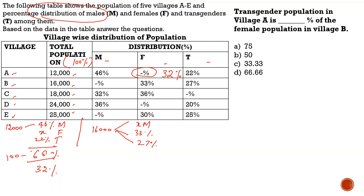If you add B: 33 plus 27 comes around 60, so 100 minus 60 gives 40%. For C, we get 68, so the unfilled is 32%. For D, adding gives 56, filled by 44%. For E, it is 55, filled by 45%. This is how we fill the unfilled columns.